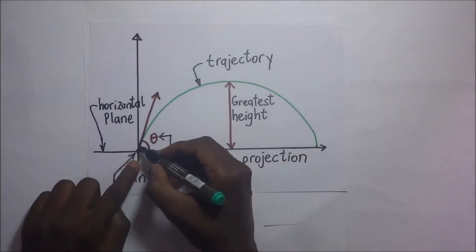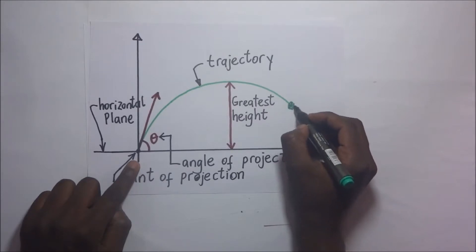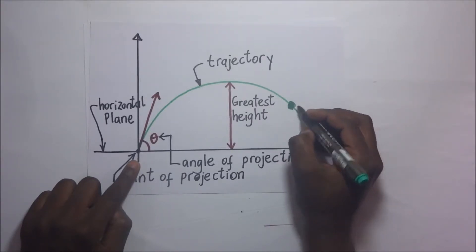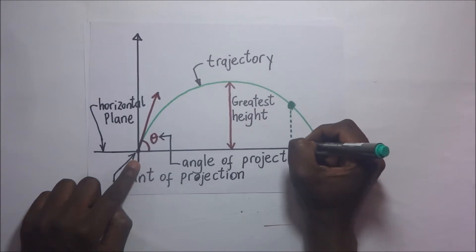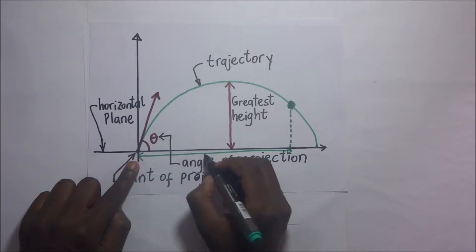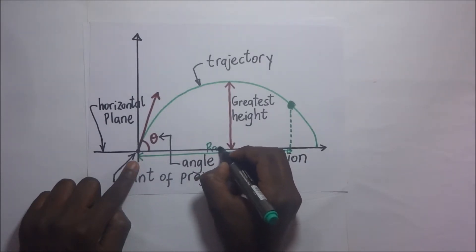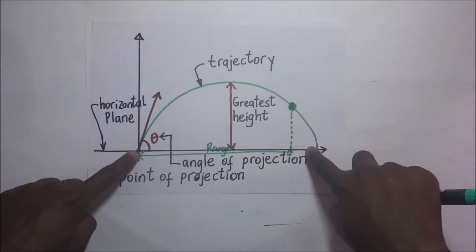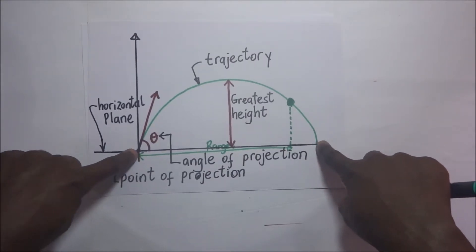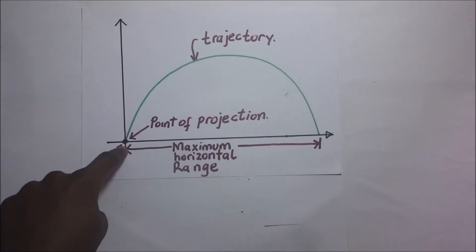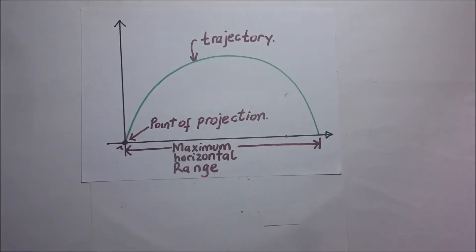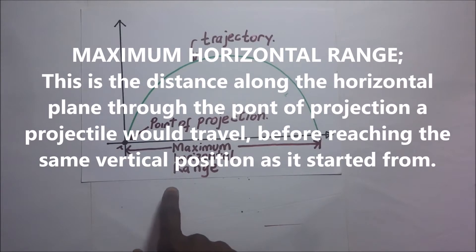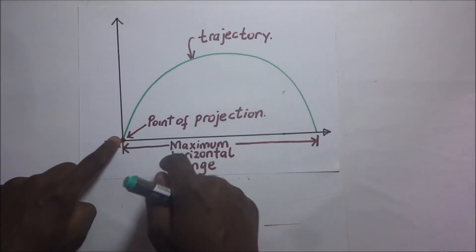The range, or horizontal range, is the distance from the initial position of the projectile to the final position along the horizontal plane through the point of projection. When the ball is at a certain point, we simply drop a perpendicular and measure off that horizontal distance — that is the horizontal range. The horizontal range keeps increasing as the ball progresses, up to what we call the maximum horizontal range.